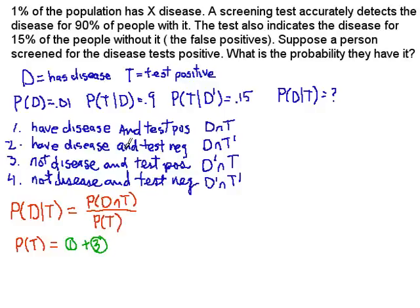In the last video, we used the decision tree to organize the information that we needed to apply Bayes' theorem to calculate a certain probability. In this video, I want to use a different way of organizing the data. So let's review the problem.